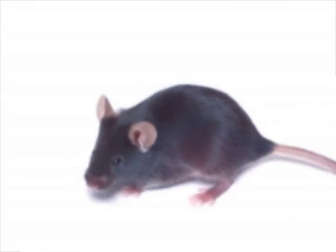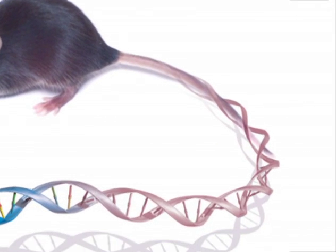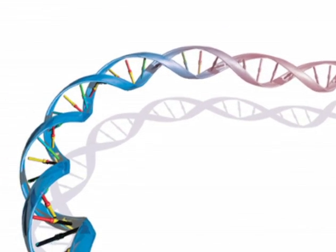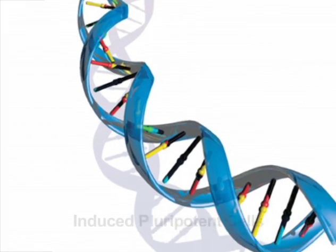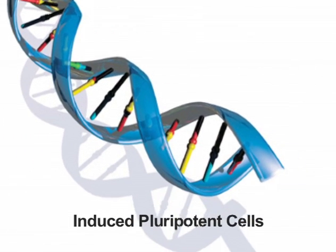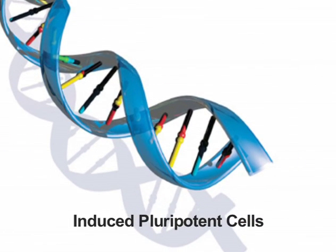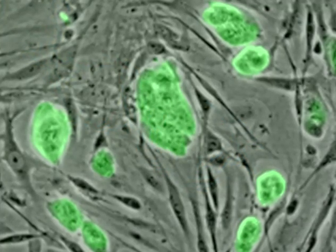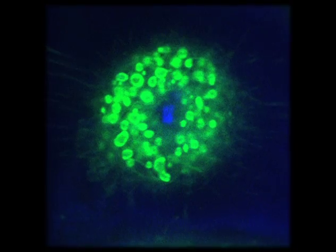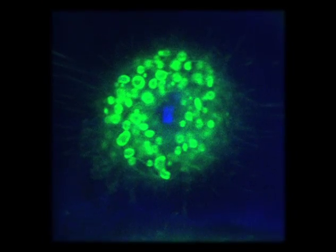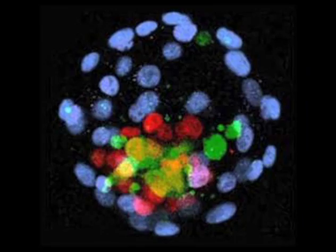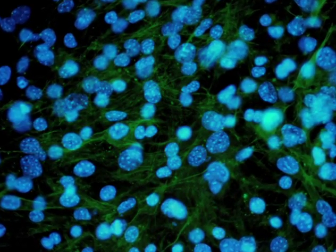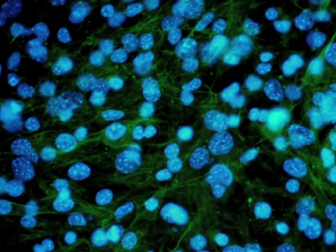Jaenisch and two other labs demonstrated they were able to create stem-like cells from mice, called iPS cells. They're really indistinguishable from embryonic stem cells. It just launched an explosion in the field. And then a few months later it was shown that it works also in human cells.